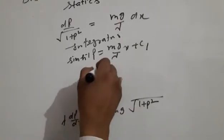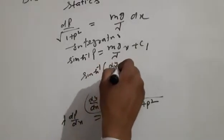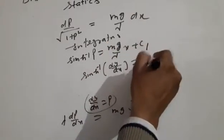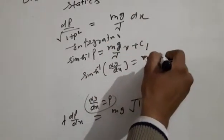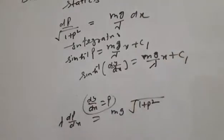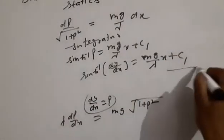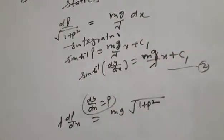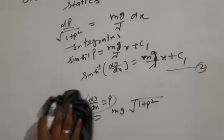Sinh inverse p, or sinh inverse dy by dx, equal to mg upon lambda into x plus c1, where c1 is the integral constant. This is equation number two.